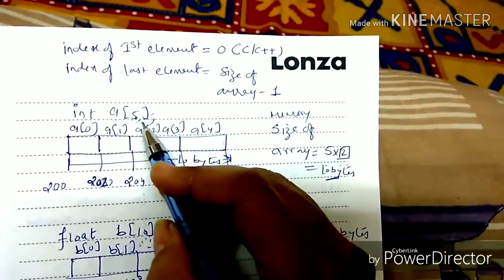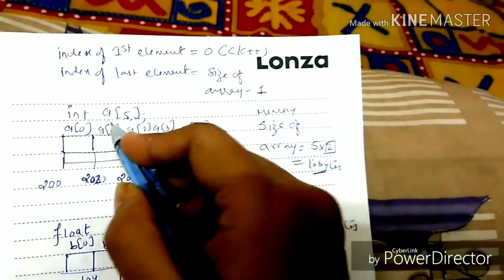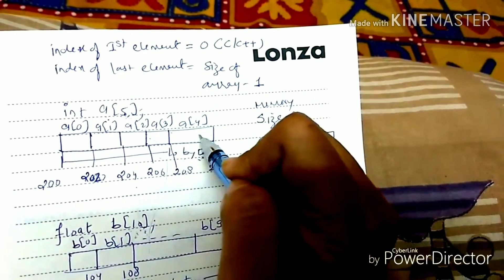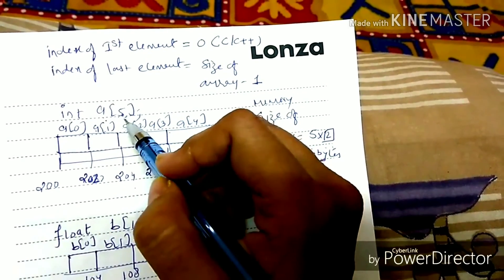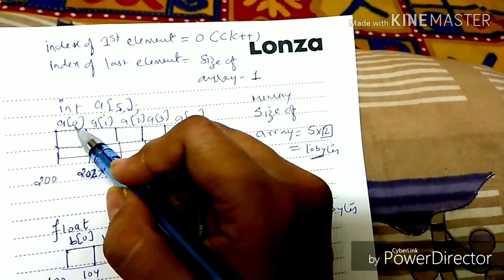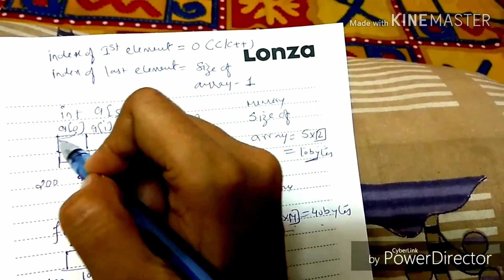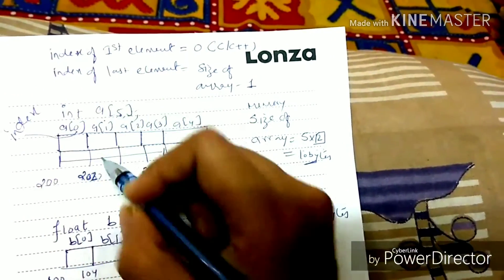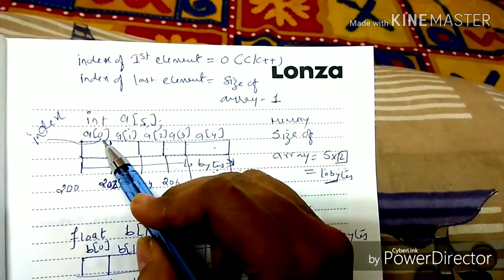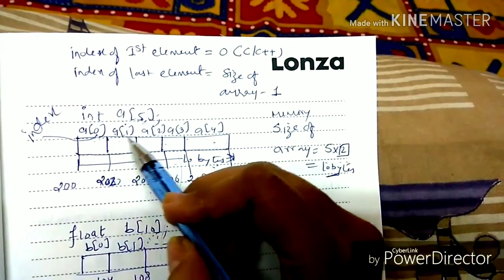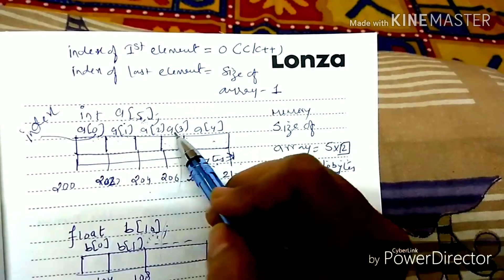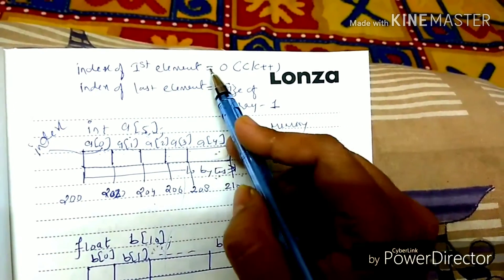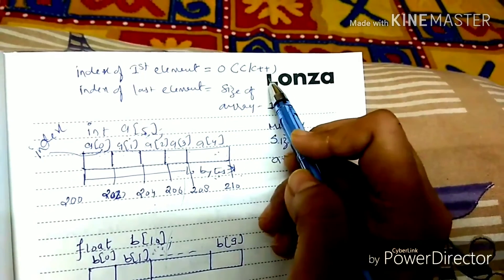Now, you have made 5 variables and the name of all variables is A. So what is the first element? The first element has index 0 in C++. The second element has index 1, 2, 3, and the last has index 4.